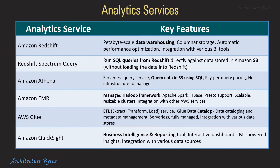Analytics services: Amazon Redshift is a petabyte-scale data warehouse. Redshift Spectrum is a feature of Amazon Redshift that allows you to run SQL queries from Redshift directly against data stored in Amazon S3. Amazon Athena allows you to query data in S3 in an ad-hoc manner using SQL. Amazon EMR is a managed Hadoop framework with support for Spark, HBase, Presto, and so on. AWS Glue allows you to create ETL jobs and also provides a Glue Data Catalog. QuickSight is a business intelligence and reporting tool.